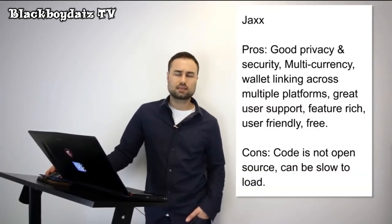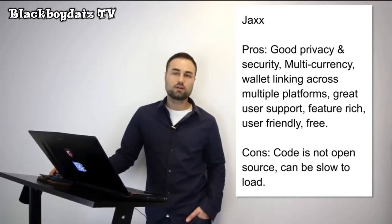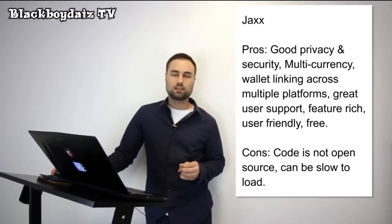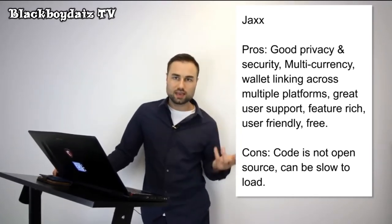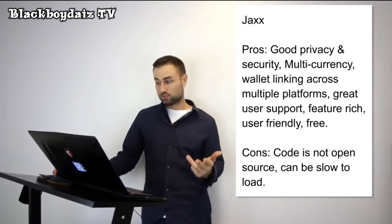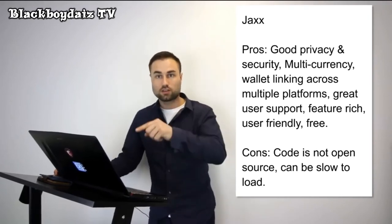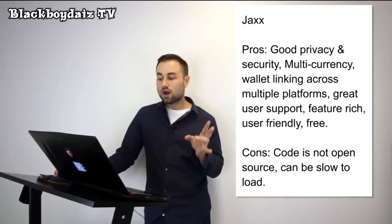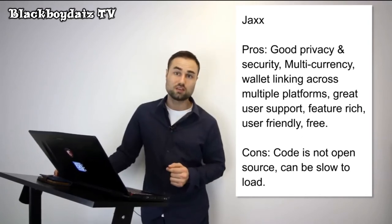Next is JAX, another mobile wallet. What's really good about JAX is it supports multiple currencies such as Ether, Ether Classic, Dash, Litecoin, Bitcoin, and many more. JAX has one of the best UX designs — it's quite intuitive, so when you log in you immediately know what's going on. The pros are good privacy, security, multi-currency support, and wallet linking across multiple platforms — you can have it on your desktop and iPad and they sync. The cons are it's open source and can be really slow. JAX is my go-to multi-currency wallet on my phone for day-to-day transactions.